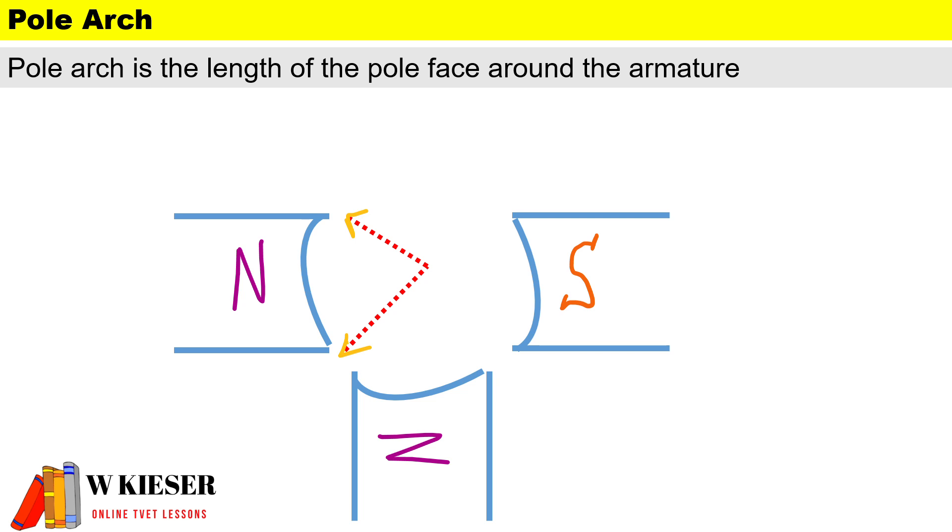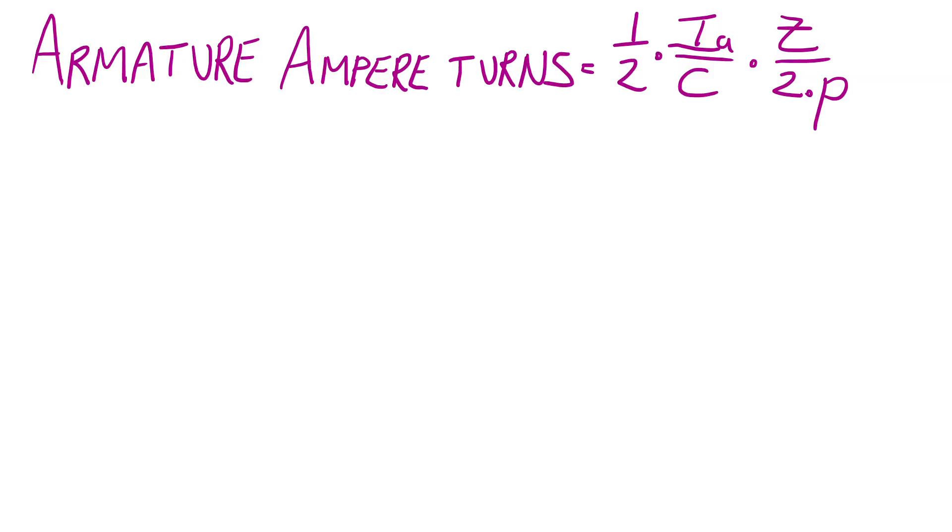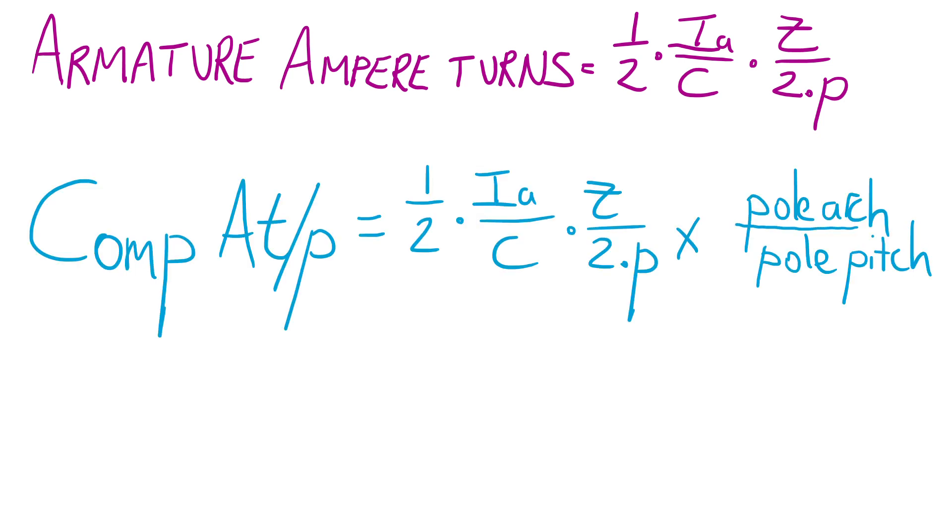For the formulas: to calculate the armature ampere turns per pole, it's one half times I_a over c times z over 2p. To calculate the compensating windings ampere turns per pole, it's one half times I_a over c times z over 2p, multiplied by the ratio of the pole arc and pole pitch.